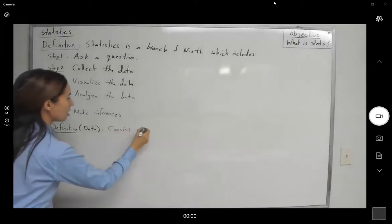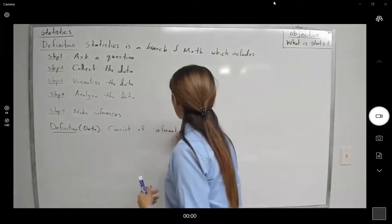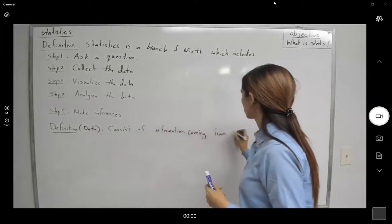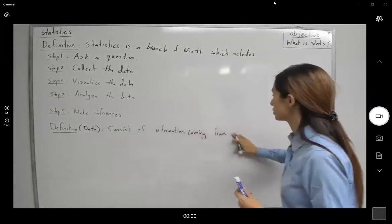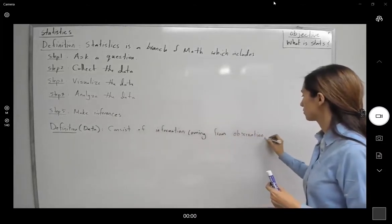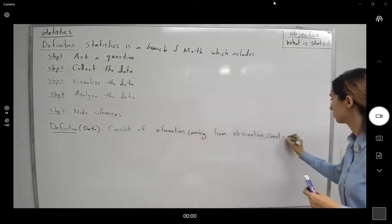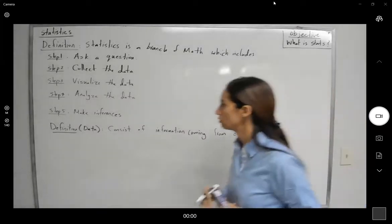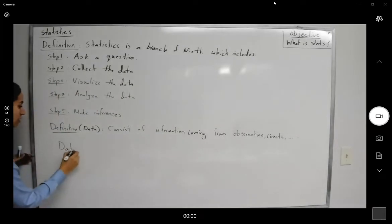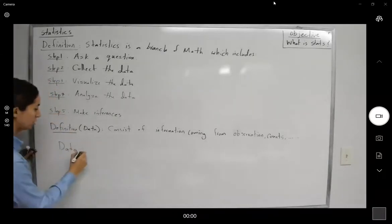Data consists of information coming from either observation or counts and so on. So the data, when you're talking about the data, the data can be classified into two sets.